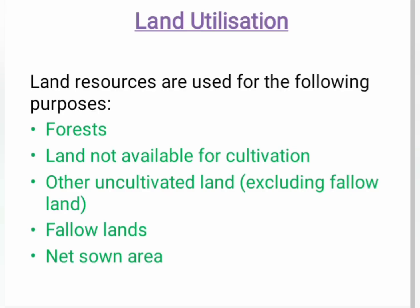On the basis of utilization, land resources of India are classified into five categories: forest; land not available for cultivation (barren and waste lands, land put to non-agriculture uses like buildings, roads, factories); other uncultivated land (grazing land, land under tree crops, culturable wasteland); fallow land (current fallow and other than current fallow); and net sown area, which along with the gross cropped area represents the total cultivated land.